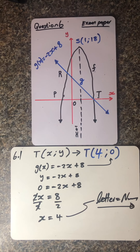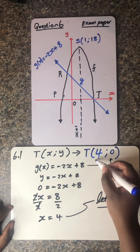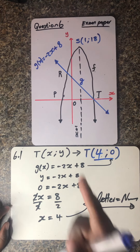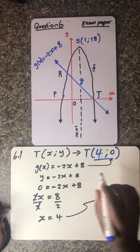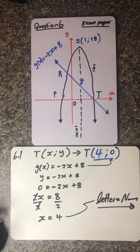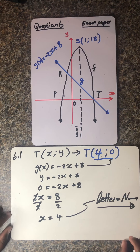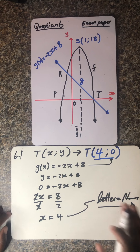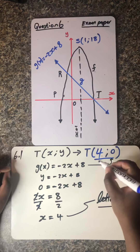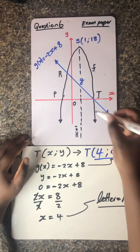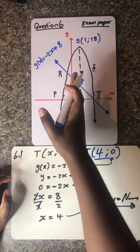What I like about functions ladies and gentlemen is that as soon as you find your final answer, the moment you find your final answer, you can actually go back to the graph to check or verify if indeed your final answer makes sense. You can still go and verify. So obviously the x value is 4, and of course we expected a value which is greater than 1.